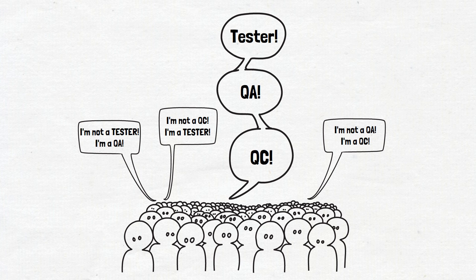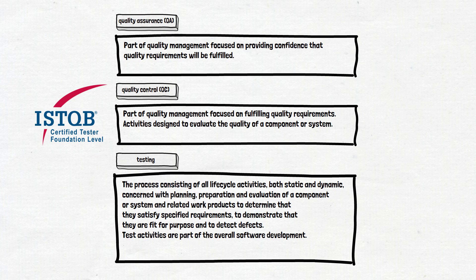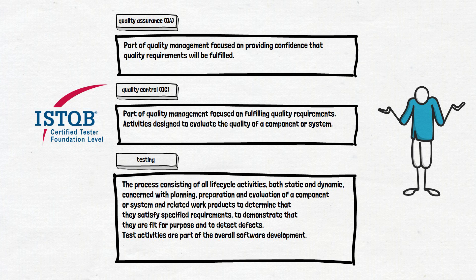What does the official literature say about this issue? We will use the ISTQB as official literature. If you don't know what ISTQB is, we will provide a link to the website in the materials for the lecture. You can pause the video and read the definitions on your own. But we can agree that the difference between these concepts is vague and unclear — especially the QA and QC definitions, which are very similar, if not nearly the same.